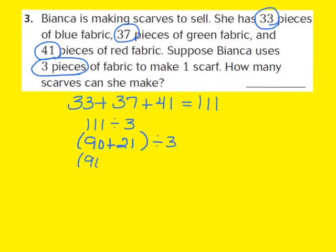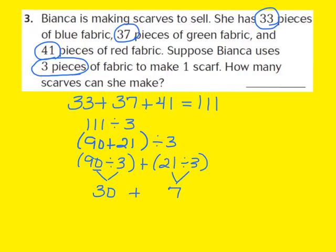I'm going to rewrite this as 90 divided by 3 plus 21 divided by 3. I now have two very simple division problems. For 90 divided by 3: I know 9 divided by 3 is 3, and with the zero behind the 9, that gives me 30. For 21 divided by 3, that gives me 7. When I add 30 and 7 together, that's 37. So Bianca can make 37 scarves, and I've used the strategy Solve a Simpler Problem to find that answer.